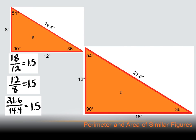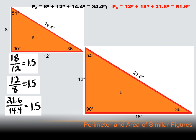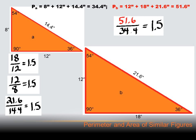Let's take it a step further with our two proportional triangles, where all sides have the same ratio of growth: 1.5. If each of the sides grows by a factor of 1.5, wouldn't the perimeter also grow by that same ratio? The perimeter of triangle A equals 34.4 inches, and the perimeter of triangle B equals 51.6 inches. The ratio of 51.6 to 34.4 is 1.5 — each side increased by 1.5, so the whole perimeter increases by a factor of 1.5.